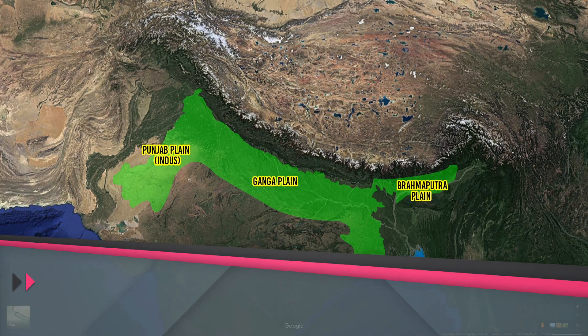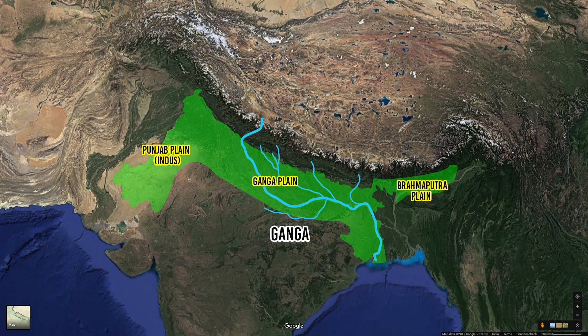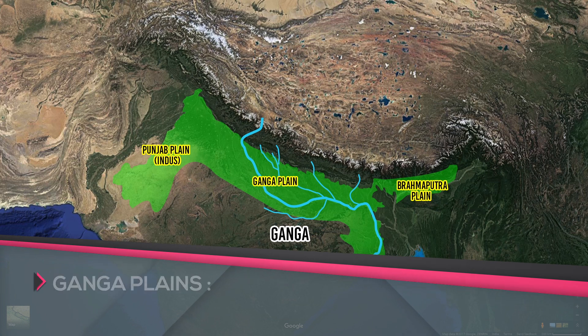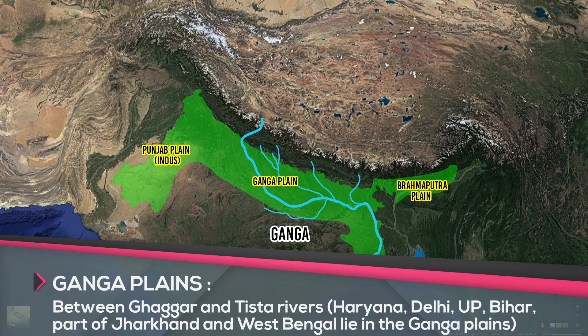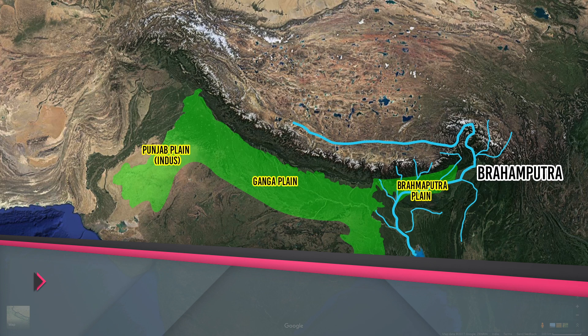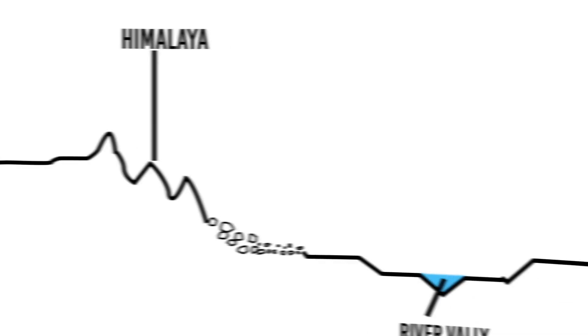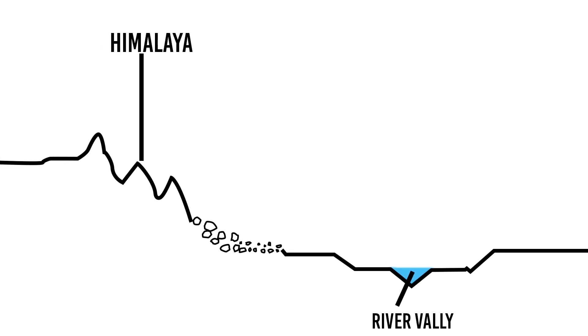The Punjab Plains were formed by the Indus and its tributaries, with the major portion lying in Pakistan. The Ganga Plains lie between the Ghaggar and Tista rivers, covering Haryana, Delhi, Uttar Pradesh, Bihar, and parts of Jharkhand and West Bengal. The Brahmaputra Plains extend from Tista to Dihang, with the major portion lying in Assam.